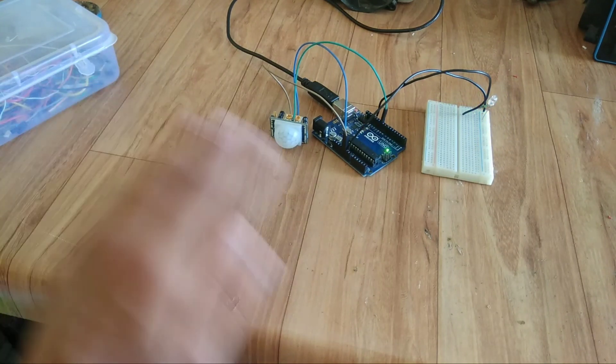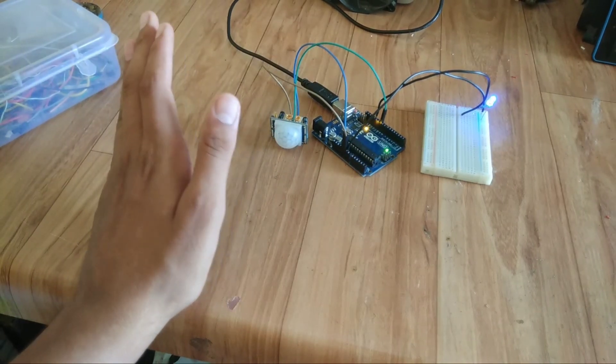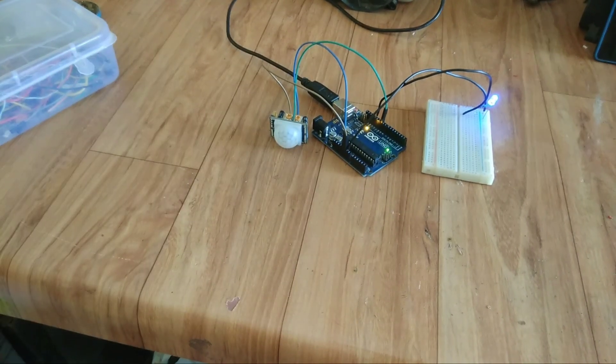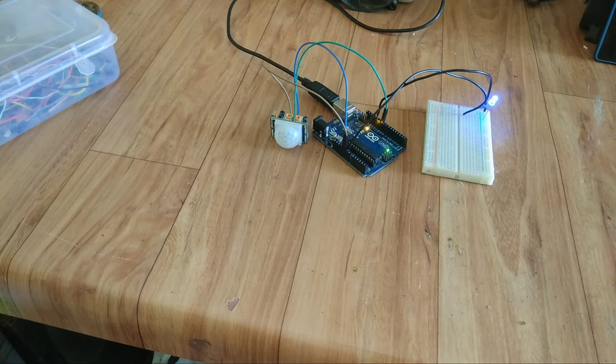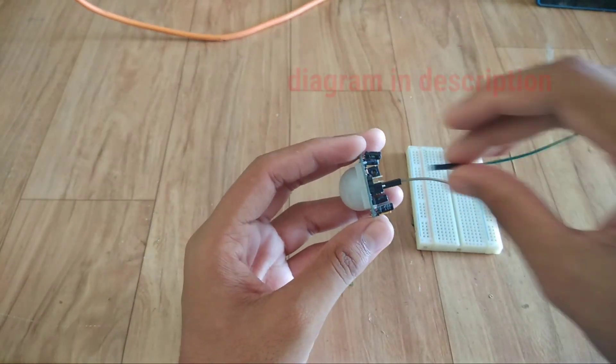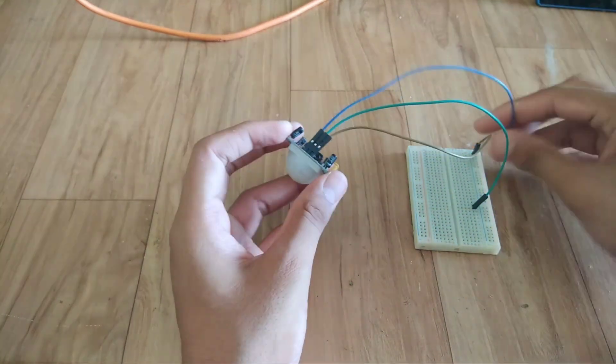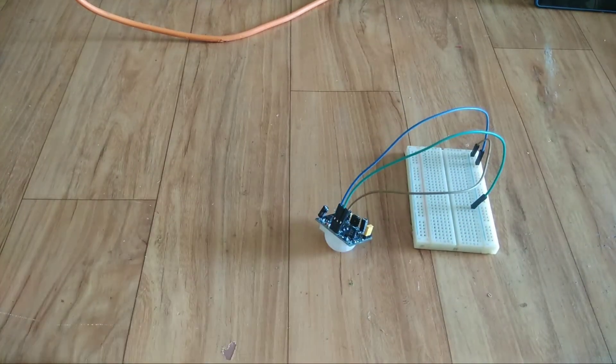You can adjust the sensitivity. You might know we can use this sensor without Arduino. Now let us make it. For that, you have to connect VCC pin to 5V, ground pin to ground, and signal pin to base of the transistor.